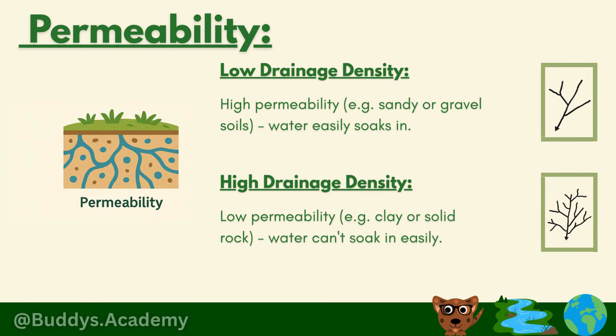Now we look at permeability. For low drainage density you need high permeability so water can easily soak in. Examples of high permeability soils are sandy or gravel soils, which have gaps between particles allowing water to pass through and infiltrate rather than run off. For high drainage density you need low permeability — examples include clay or rock, which are tightly packed, making it hard for water to soak in and leading to more surface runoff.